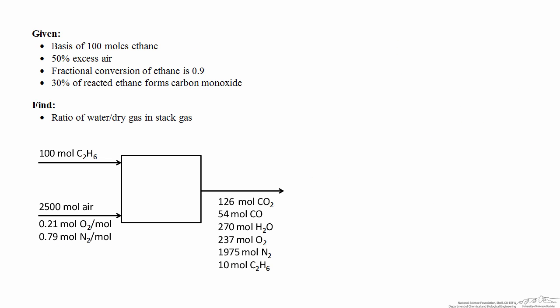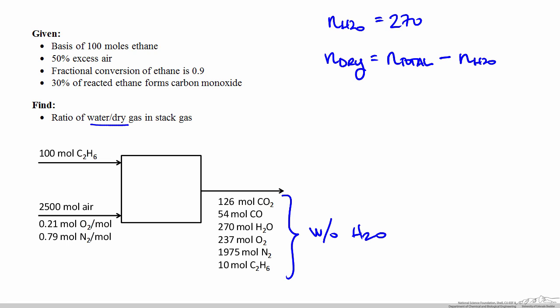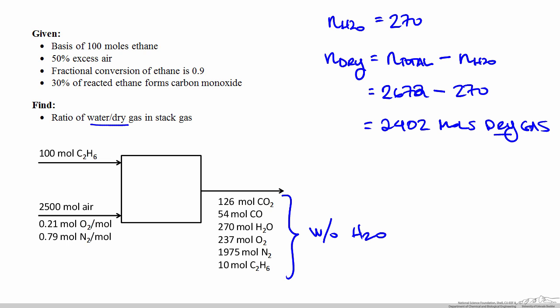We were asked to find the ratio of water to dry gas in the stack gas. The dry gas represents everything in the stack gas except water. From the atom balances we found 270 moles of water. The total moles in the stack gas sum to 2,672, and subtracting the 270 moles of water gives 2,402 moles of dry gas. The ratio of water to dry gas is 270 / 2,402 = 0.112, which is essentially a metric of humidity content on a dry basis.